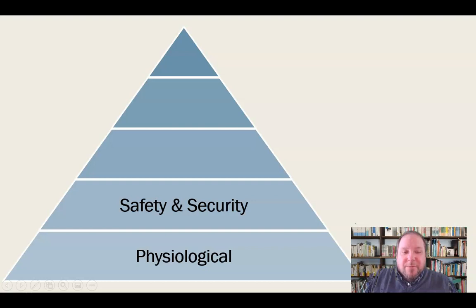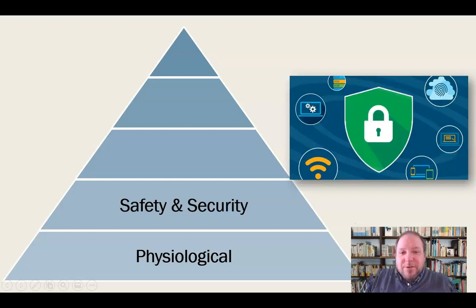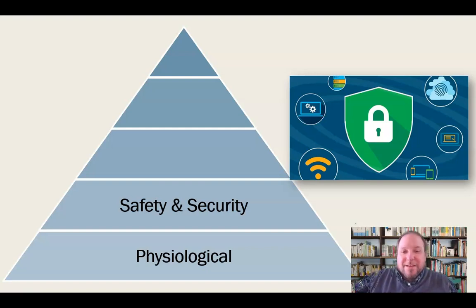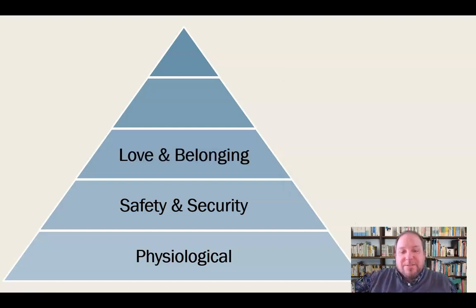Once we have our physiological needs met, we move into safety and security needs. Am I secure? Am I safe where I'm at? Not only have I met my body's most basic needs, but do I have some sense of security and safety? That's the next important need to meet according to Maslow. Once we meet our physiological needs, then we can meet our safety and security needs.